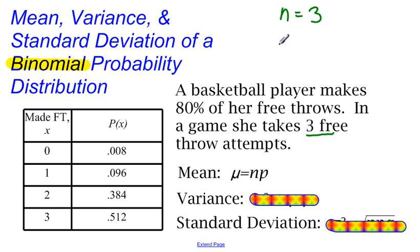She's taking three free throw attempts. So n is three. p is the probability of a success. And it tells us that the probability that she makes her free throw is 80%. So p is 0.8. So all I have to do to find the mean down here, the mean of this would be three times 0.8. And three times 0.8 is 2.4.